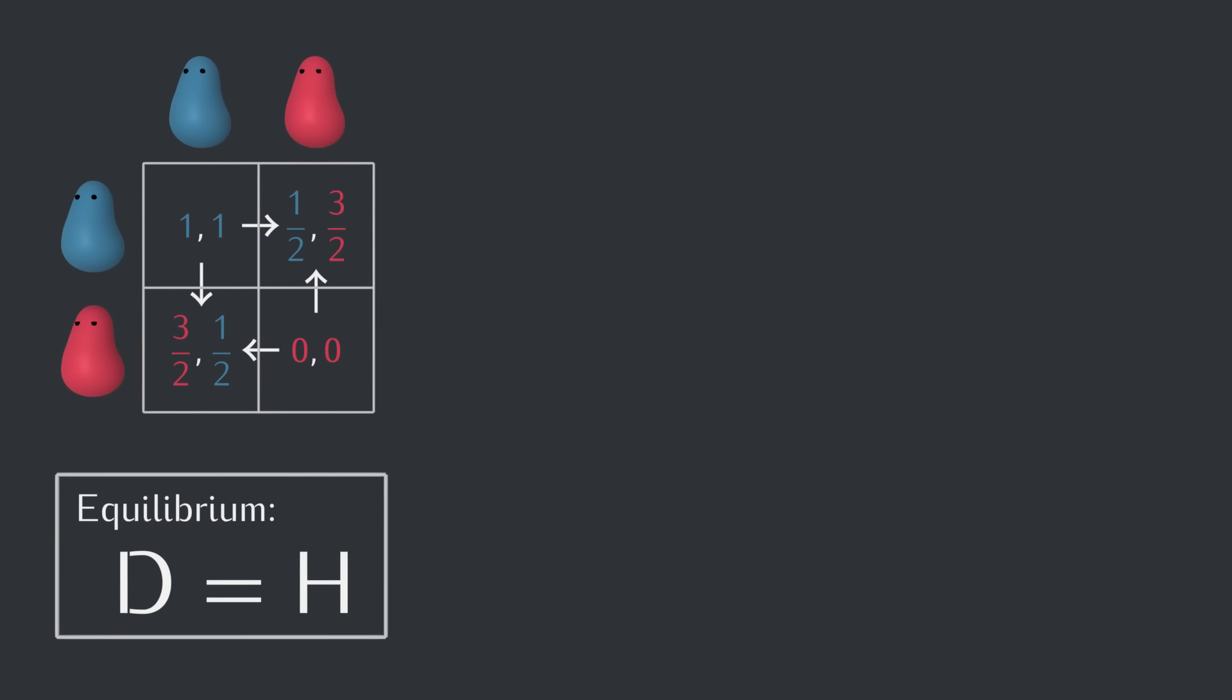On our way there, let's first calculate the expected average score for a dove in a hypothetical example, say, where the rest of the population is 90% doves. So let's see, a dove will have a 90% chance of facing another dove, in which case it gets the dove vs. dove payoff of one food.